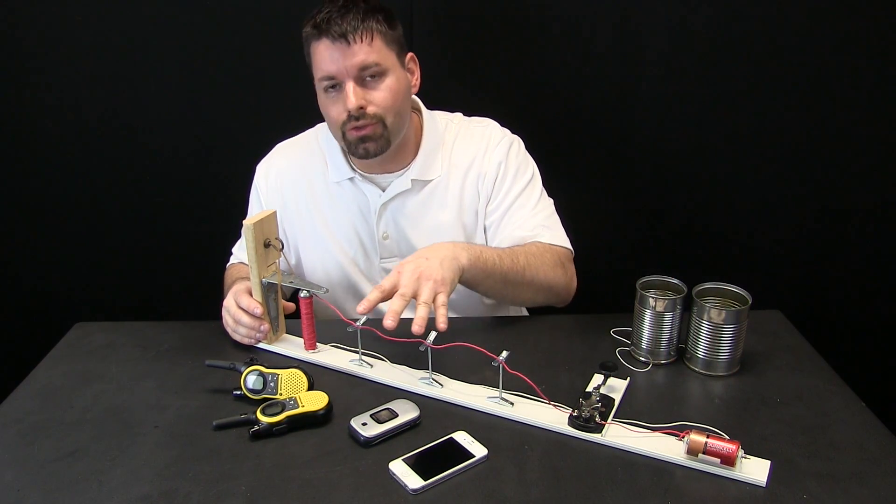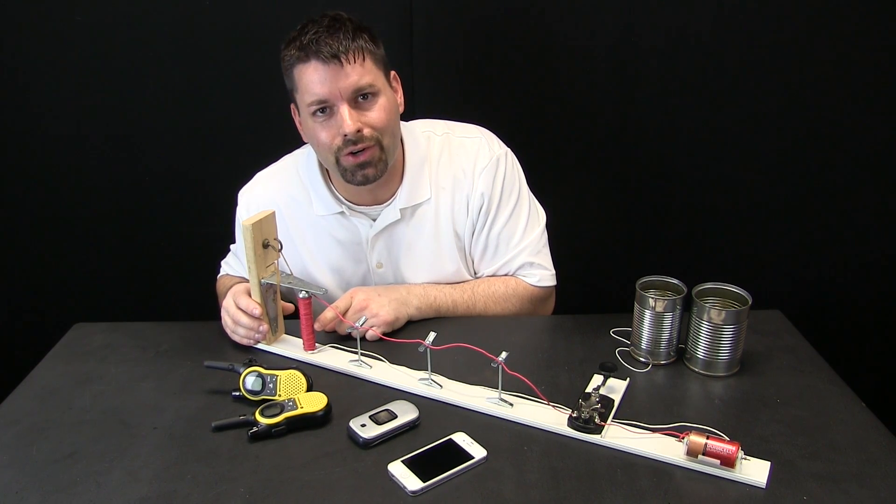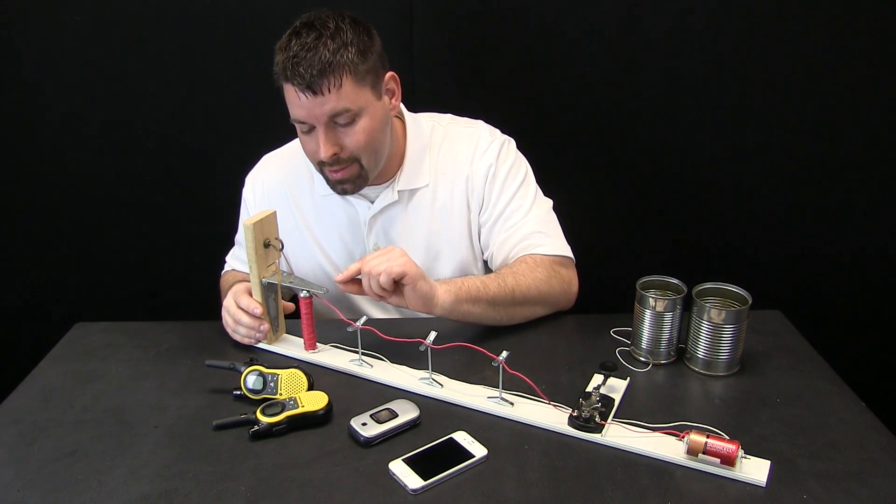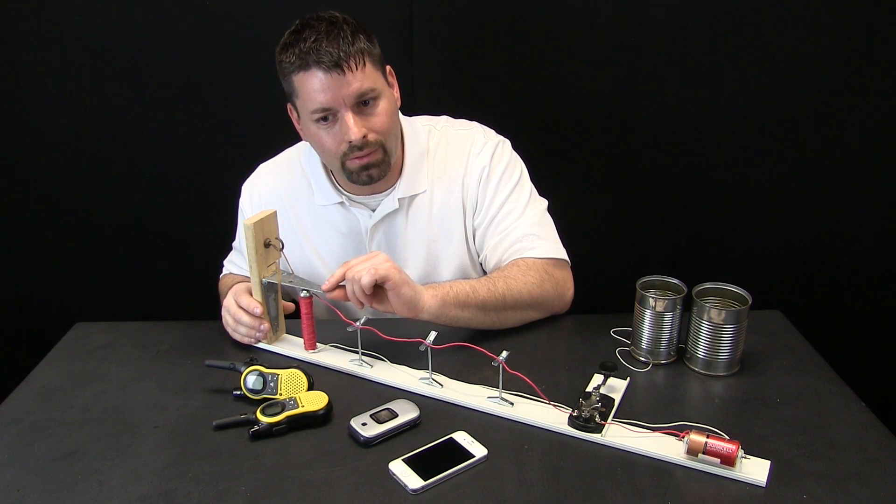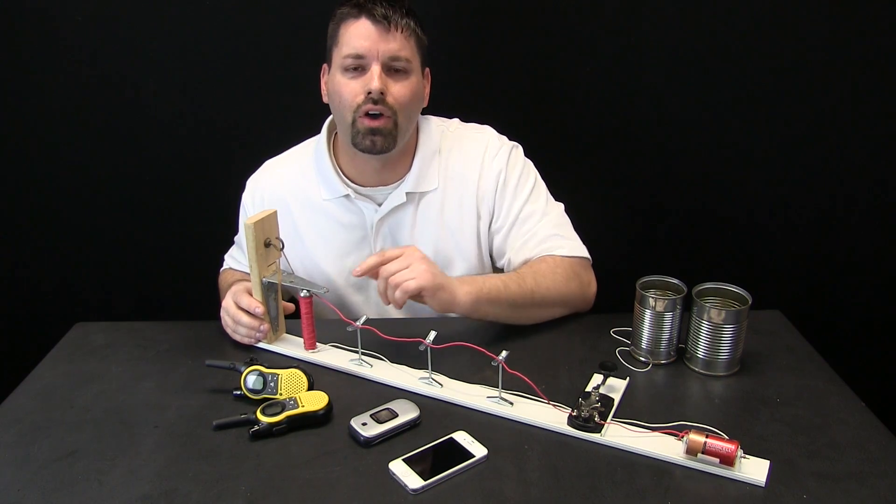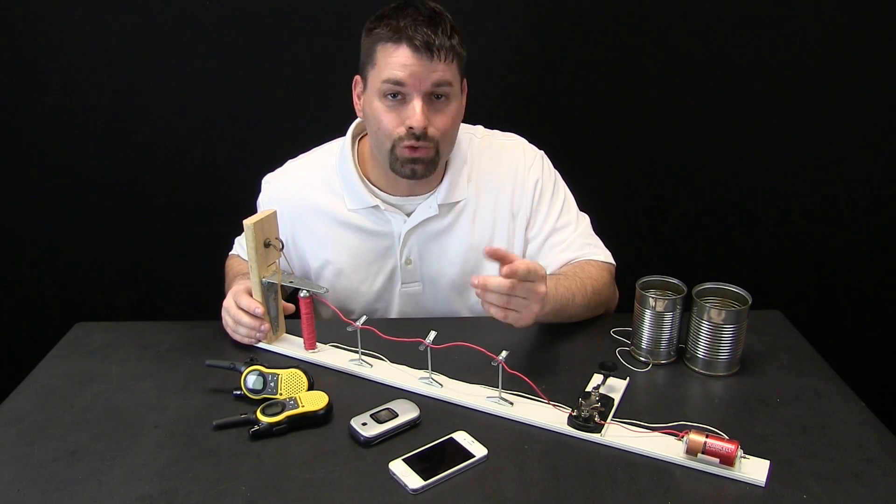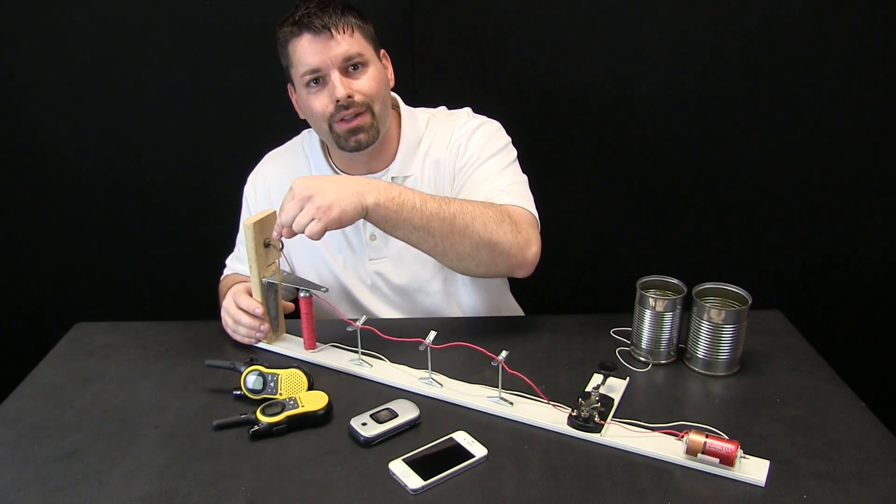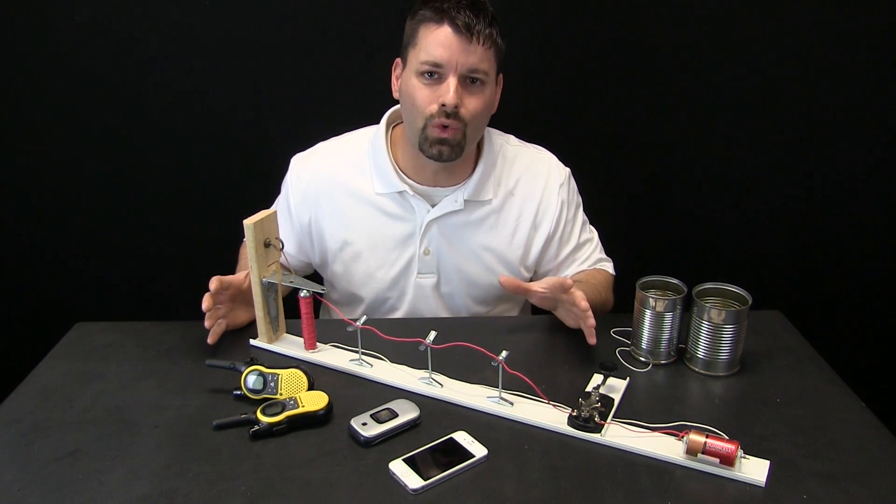Electricity flows through these wires, and the electricity actually turns this metal pole into a magnet. When it becomes a magnet, this piece of metal is pulled down, and I can tap out all kinds of patterns. And those patterns would be letters and numbers that I could send from one end down to another.